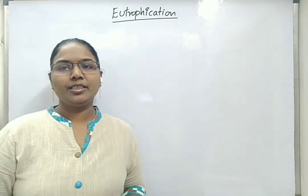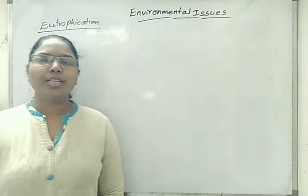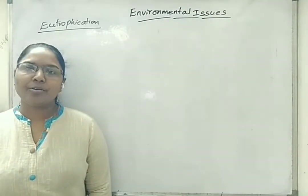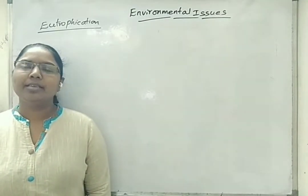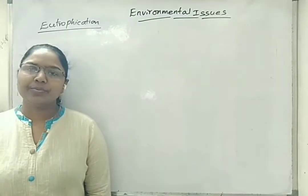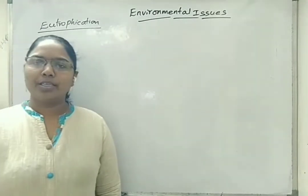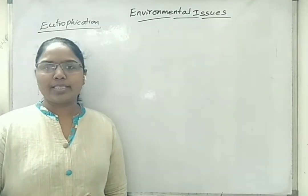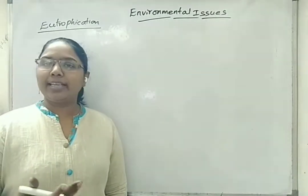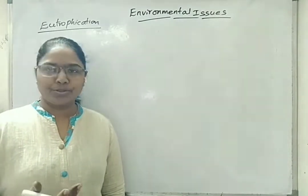Hello students, now we will start with a new topic that is about eutrophication. What is meant by eutrophication? Natural aging of a lake or a water body because of the dead and decayed organisms which are present, which are living inside the water only, nothing but called as aquatics. Because of them, if the age of the lake or the water body is increased, then we call it as eutrophication.